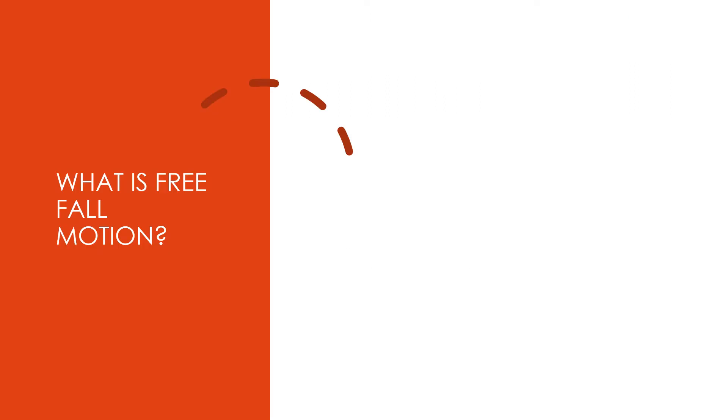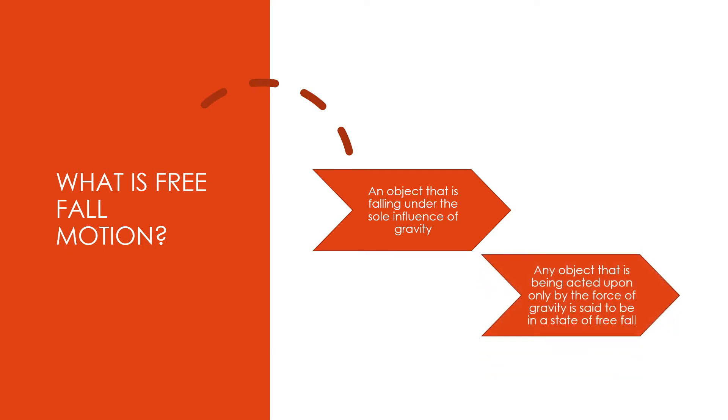What is free fall motion? A free fall motion is an object that is falling under the sole influence of gravity. It is also any object that is being acted upon only by the force of gravity that is said to be in the state of freefall.